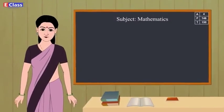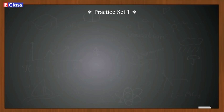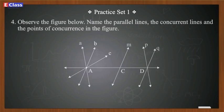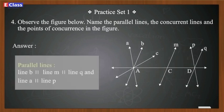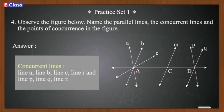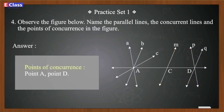Students, let's solve question four of practice set 1.1. Observe the figure — name the parallel lines, concurrent lines, and points of concurrence. Answer — parallel lines: line B is parallel to line M, which is parallel to line Q; and line A is parallel to line P. Points of concurrence: point A and point D.